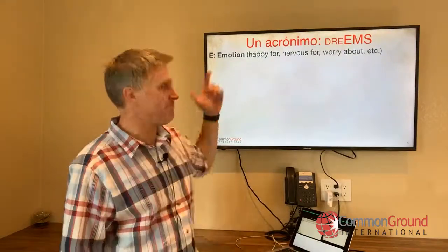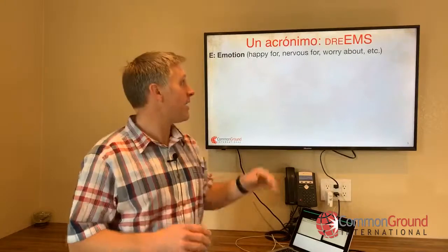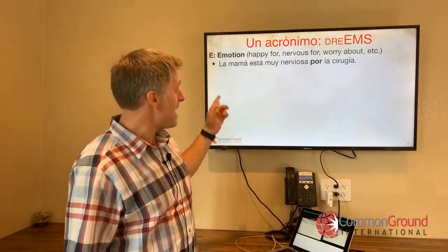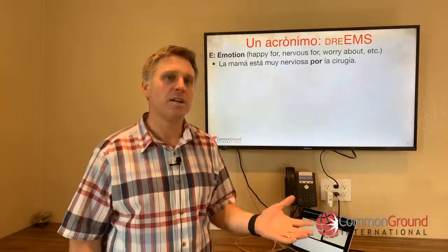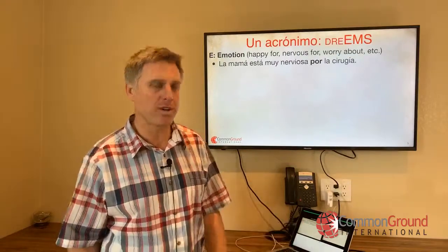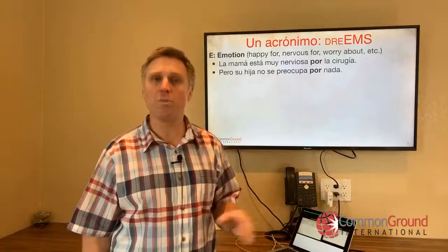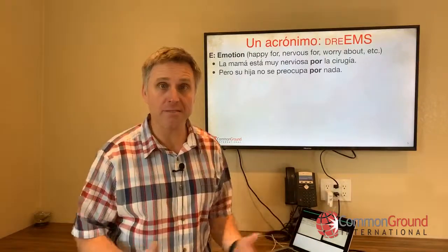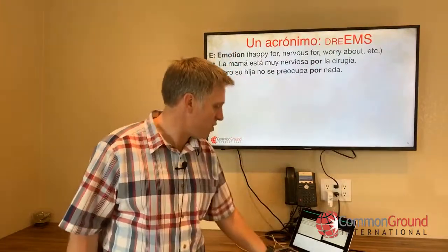The second E is Emotion — happy for, nervous, worried. These are always going to be por. "La mamá está muy nerviosa por la cirugía." The mom is nervous about — nervous for — the surgery. "Pero su hija no se preocupa por nada." But her daughter doesn't worry about anything. So por with emotion.